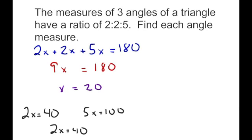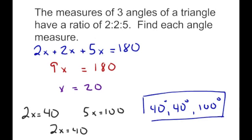We substitute back in to find each angle measure. 2 times 20 is 40, 2 times 20 is again 40, and 5 times 20 is 100. So our three angle measures are 40 degrees, 40 degrees, and 100 degrees. We can also verify: 40 plus 40 plus 100 equals 180, so we know that's correct.